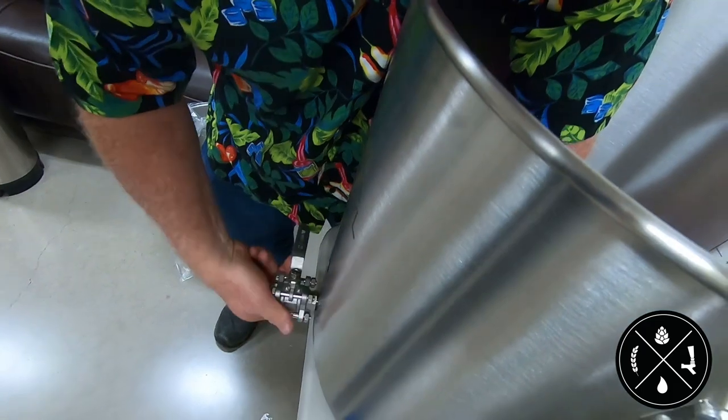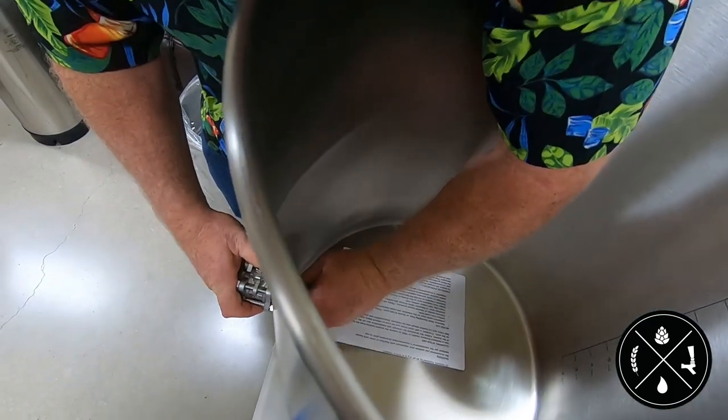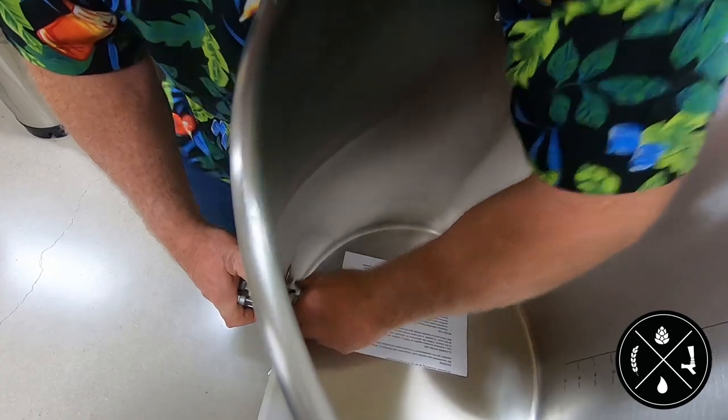Take the stainless steel lock nut with groove side inward and thread this in and onto the threaded nipple on the inside of the kettle.